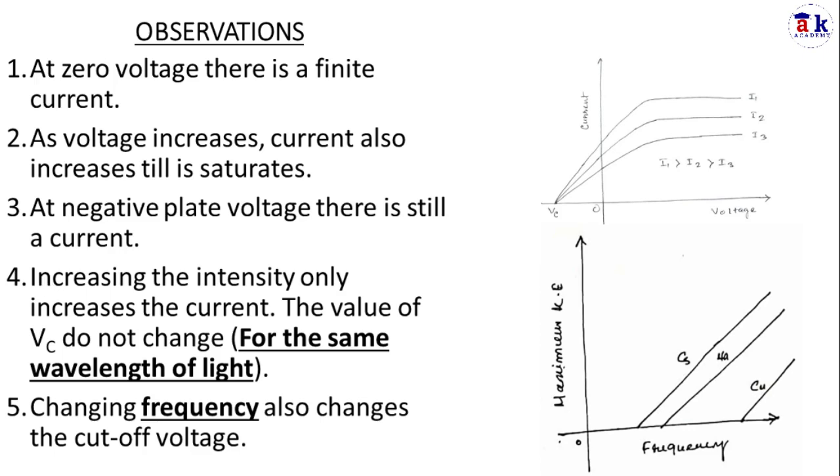The fourth observation is increasing the intensity only increases the current. The value of Vc does not change at all for the same wavelength of light. The maximum kinetic energy of the photoelectrons is not increasing. This is a very peculiar observation and we'll see why it is so.